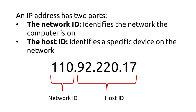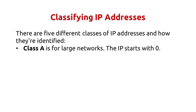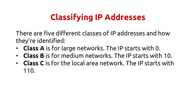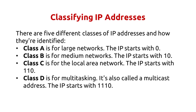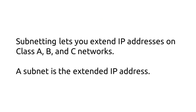In summary: an IP address has two parts — the network ID identifies the network the computer is on, and the host ID identifies a specific device on the network. There are five classes of IP addresses: Class A for large networks, Class B for medium networks, Class C for local area networks, Class D for multicast, and Class E for experimenting. Classes A, B, and C are the most commonly used. Subnetting lets you extend IP addresses on Class A, B, and C networks — a subnet is the extended IP address.